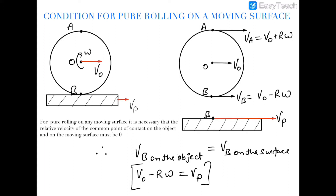There is a ring which is moving with some velocity v-naught — its center is moving with velocity v-naught — and this ring is rotating about its central axis with angular velocity omega. This ring is situated on a plank which is already moving with a velocity vp. For pure rolling on any surface, the velocity of the point of contact on the body and the point of contact on that surface should be equal.